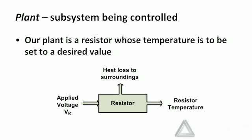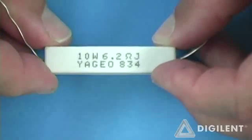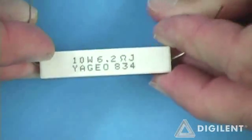Each of these subsystems will be described by an input-output relationship. For the resistor, we are applying a voltage to the resistor, V sub R. Increasing the voltage to the resistor will increase the resistor temperature; decreasing the voltage will decrease the temperature due to heat lost to the surrounding atmosphere. Our input is some applied voltage; our output is the temperature of the resistor. In the control system we're designing, our plant is the power resistor from the analog parts kit. If I apply a voltage difference across the two leads, that will dissipate power through the resistor as heat, so increasing voltage increases temperature and decreasing voltage decreases temperature.